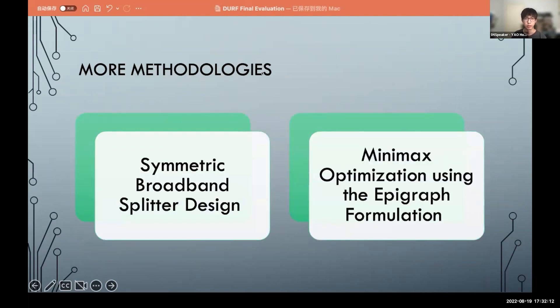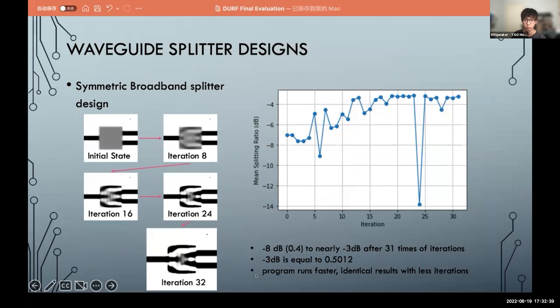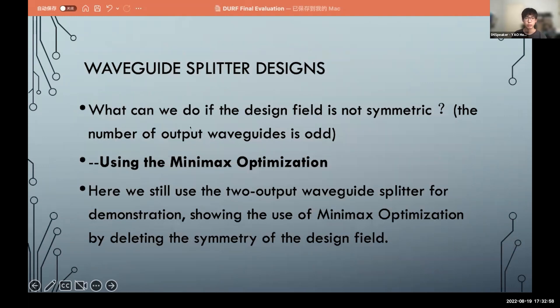And there are two methodologies we use to design the power splitter. The first one is a symmetric broadband splitter design. As you can see, there are two waveguides and they are symmetrical to the x-axis, so we can just set our design region to be symmetrical to the x-axis. In this case we just need to calculate the output of one waveguide. It saves a lot of time and calculation. And when we run the program, the program runs faster and gets identical results with just 32 times of iterations. And also the mean splitter ratio is 0.5, it means that almost all power has transformed through this waveguide.